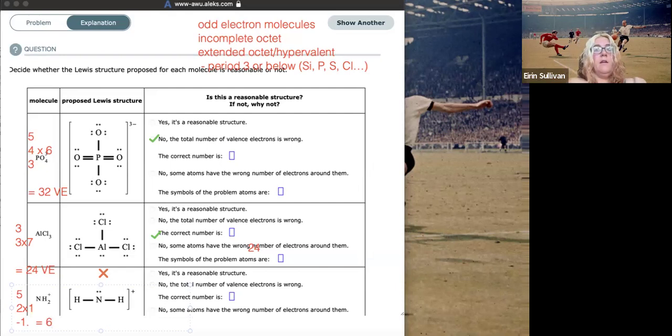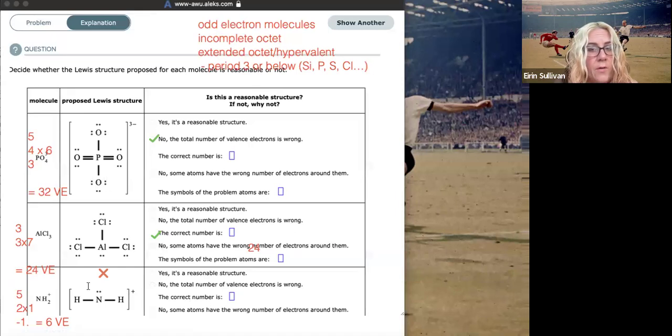So again, we're going to have to have an incomplete octet because we don't even have eight valence electrons in our whole structure. So if we have a look at this, what has been drawn here? We've got two, four, six. So the number of valence electrons is good here. And there's a lone pair on the nitrogen there. So I would go ahead and say that that is actually just fine.